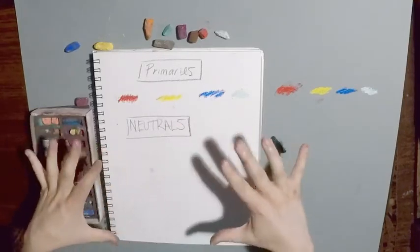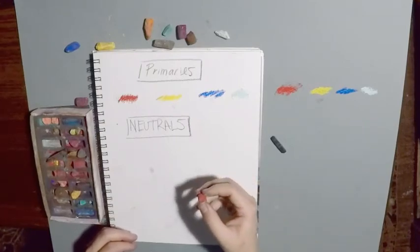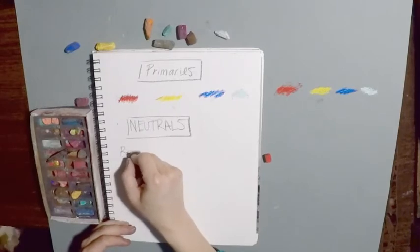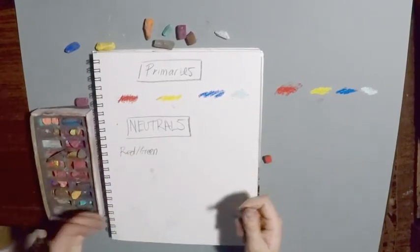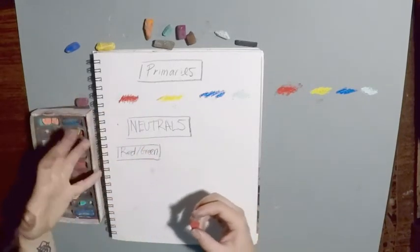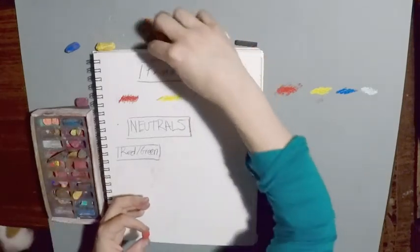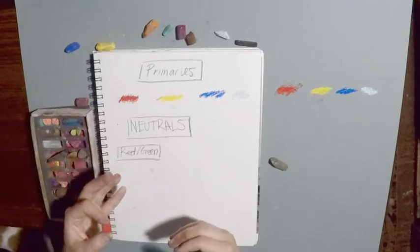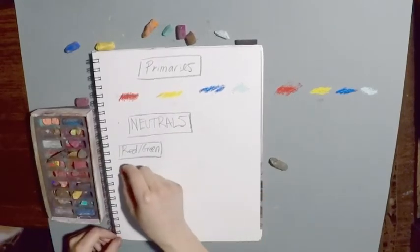Complementary colors are colors that are opposite each other on the color wheel. I'm going to make versions of warm and cool neutrals with different complementary color combinations, beginning with red and green. They're complementary colors — that means they're opposite of one another on the color wheel. Red is very warm, green is cooler — it has blue and yellow in it. When we combine these together it's going to make a type of brown, but what's interesting is you can push this brown either a little bit more red or a little bit more green.